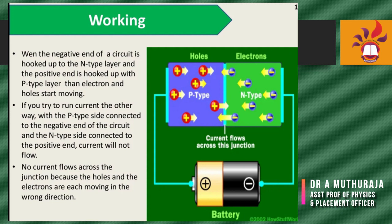In the opposite direction, if the p-type side is connected to the negative end of the circuit and the n-type side is connected to the positive end, current will not flow. No current flows across the junction because the holes and electrons are moving in the wrong direction.